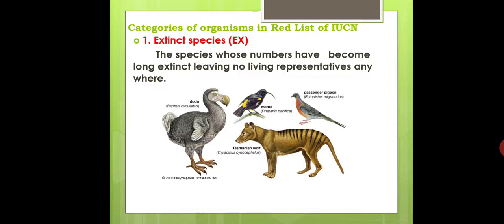The organisms are categorized in the Red List based on their current population size, rate of dwindling or decline, range of distribution, and fragmentation and segregation of distribution. IUCN categorizes organisms — both plants and animals — in nine categories.